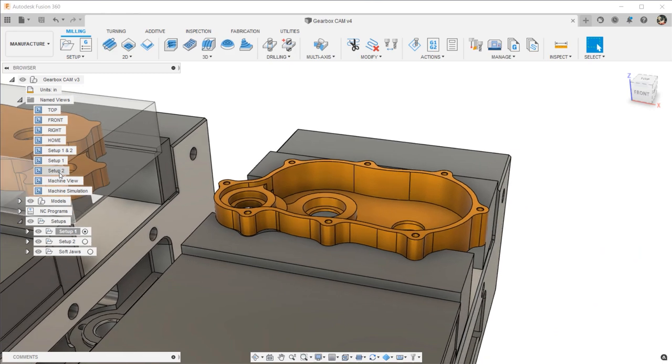For Op 2, we'll use a pair of soft jaws and cut the part profile into the jaws. This way we can locate the part accurately and hold onto it securely.